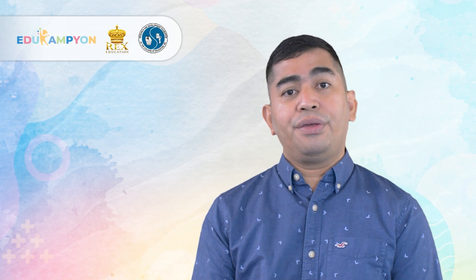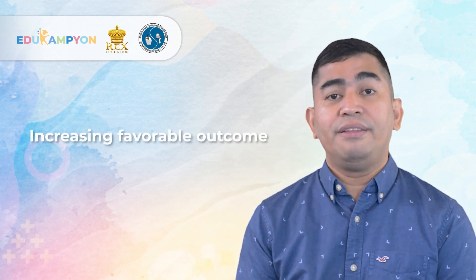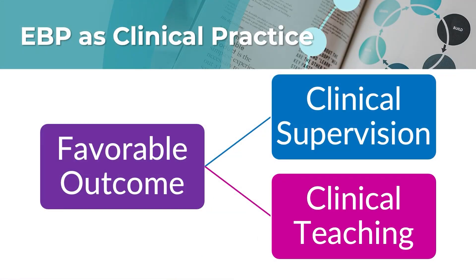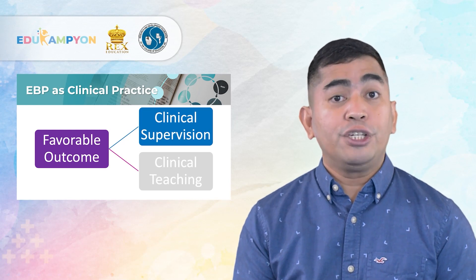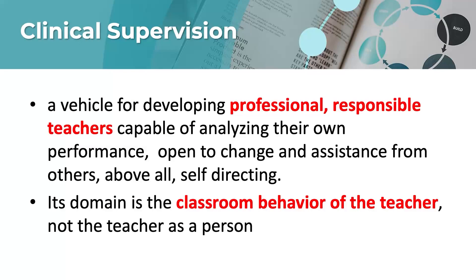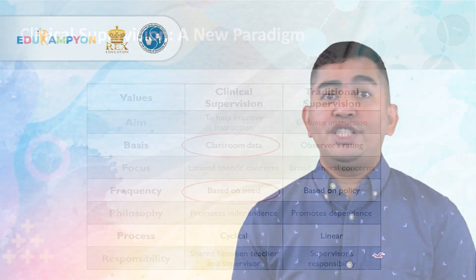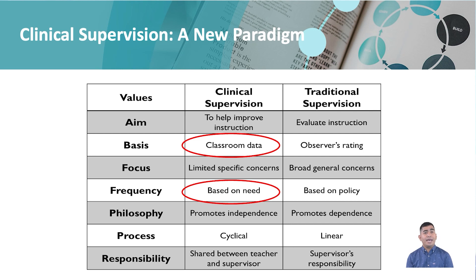The third main idea in evidence-based practice is about increasing the favorable outcome. EBP is expressed through clinical practice in education — this is a shift from the traditional to clinical approach. For education leaders, this involves clinical supervision. Clinical supervision is a vehicle for developing professionals to be responsible — teachers who are capable of analyzing their own performance, open to change and assistance from others, and above all, self-directing. Clinical supervision promotes collegial supervision and is focused on classroom data based on need, and it is cyclical.